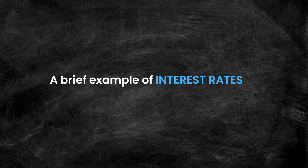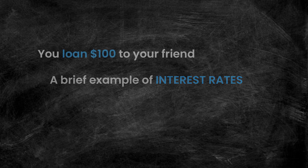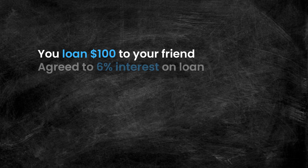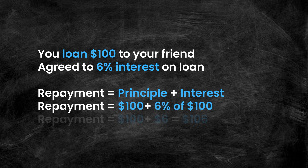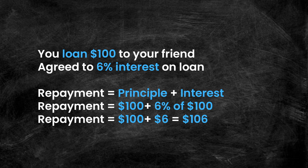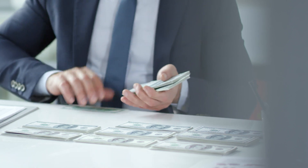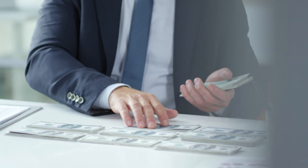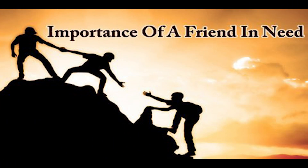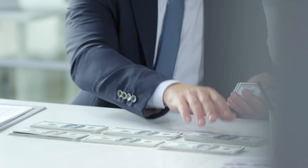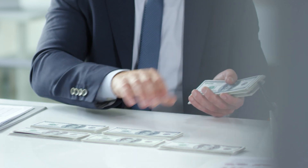First, it will help to understand what interest rates are in the first place. Consider this example: suppose you lend your friend $100 with an agreement that they will pay you back with interest, let's say 6%. This means that when they pay you back, you will claim your principal $100 back as well as 6% interest on your $100 loan — in this case, that'd be $6. Think of this as an incentive to offer your friend the loan. When offered a 6% interest rate, all of a sudden you can make money loaning out your principal.